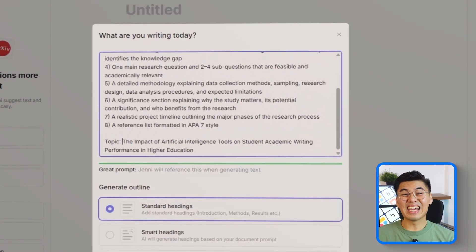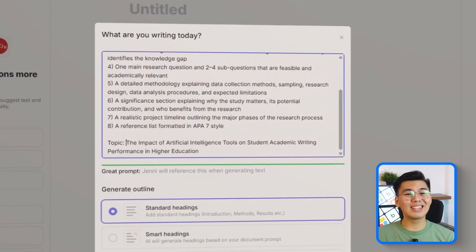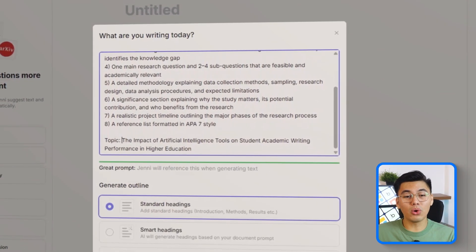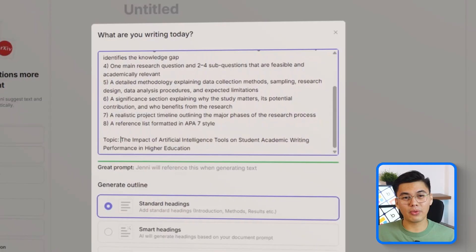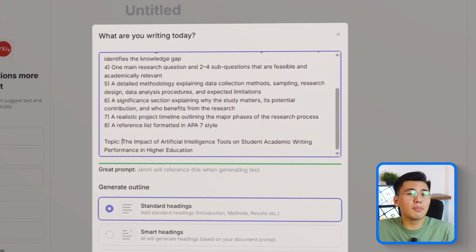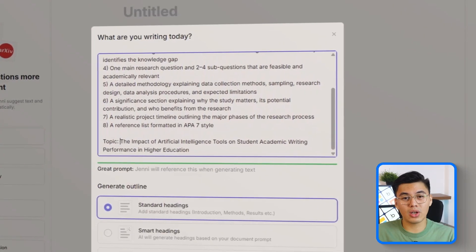well-structured research questions, a detailed methodology, a significance section, a realistic project timeline, and a full list of APA formatted references. Nothing is left out, and that's why this single instruction can produce a complete academic draft on its own.